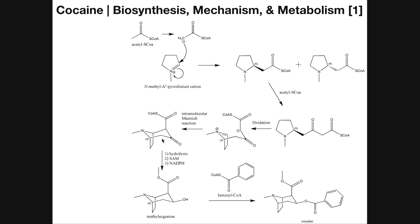You're going to have an intramolecular cyclization reaction where the lone pair on this carbon attacks another carbon to form a bond, generating a bicyclic compound — bicyclic because it has two rings that are interconnected. Once you have this bicyclic compound, there's going to be a hydrolysis to remove the coenzyme A, a methylation of the resulting oxygen to get the methyl ester, and then a reduction reaction using NADPH to reduce the ketone to an alcohol. This molecule is called methyl ecgonine.